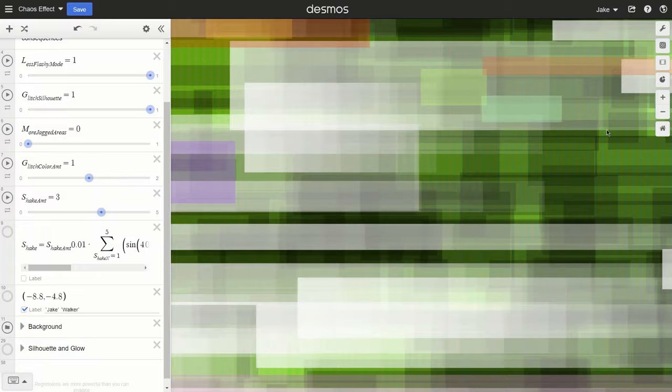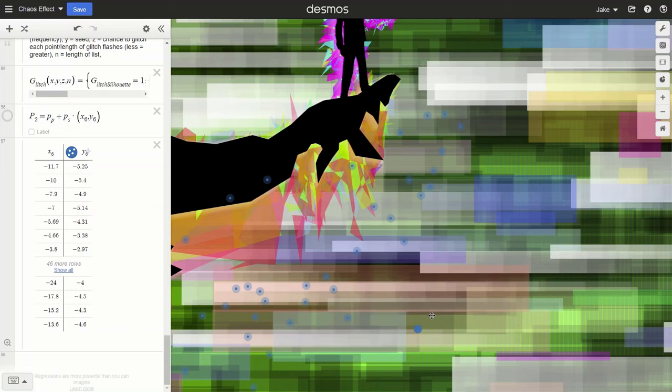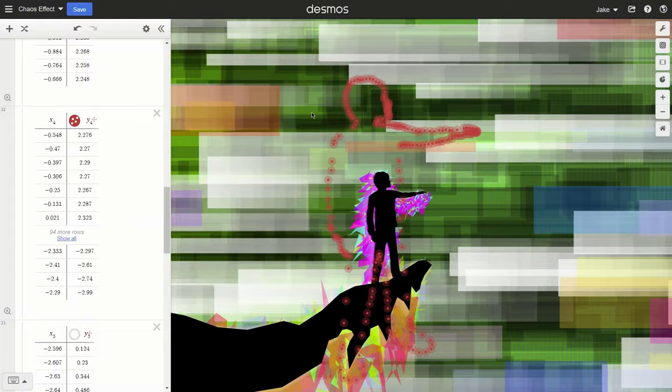I was experimenting with effects out of random numbers and came across this really cool background effect, so I felt like I had to do something with it. The platform was made without any reference, but I used a picture of myself that I traced over in order to make the person. The glitch effects behind them were made from taking the points of the silhouettes and offsetting them with random numbers.